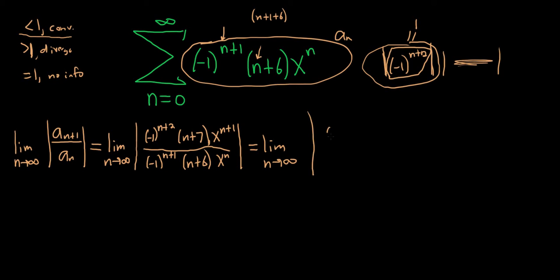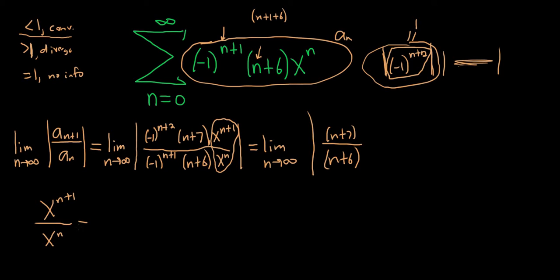So we have n plus 7 over n plus 6. Now these x's can be simplified. You have x to the n plus 1 over x to the n. You can write the numerator as x to the n times x to the 1, because when you multiply these you add the exponents. On the bottom we have x to the n, and these cancel, giving you just x. So this cleans up really nicely.